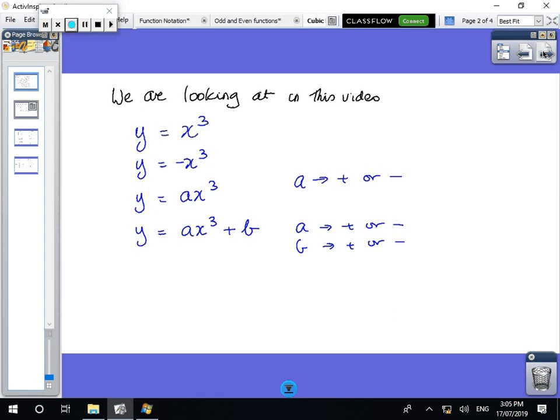So in this video we're going to be looking at just the really straightforward one, y equals x cubed, y equals minus x cubed, y equals some number of x cubed, and y equals some number of x cubed plus or minus a number. So a can be a plus or minus number, and b can be a plus or minus number. So they're the ones we're going to look at in this video.